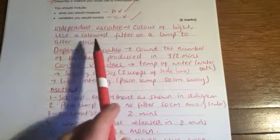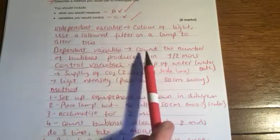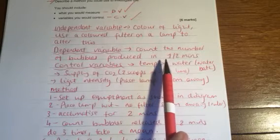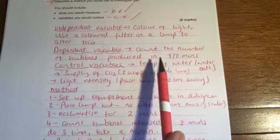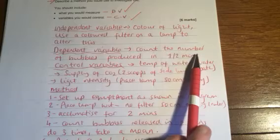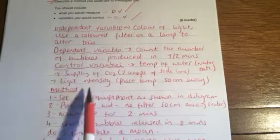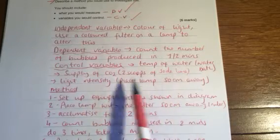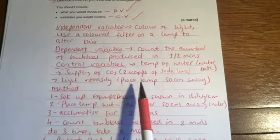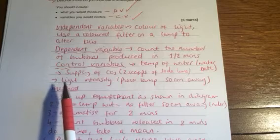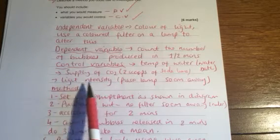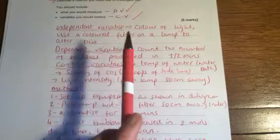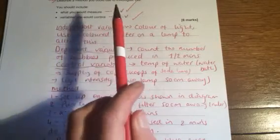Your dependent variable I'd always lay it out like this. I'm going to just quite simply count the number of bubbles produced in a minute, one or two minutes. You could have said I would have collected the volume of gas produced in one or two minutes. But you've got to make sure it's a rate which is why you have to imply that you're doing it in a certain amount of time. Then I do my control variables. I'm going to control the temperature of the water using a water bath. I'm going to control the supply of carbon dioxide using two scoops of soda lime. I'm going to control the light intensity, not the colour because that's what I'm changing, and I'm going to do that by placing the lamp 50 centimetres away each time.